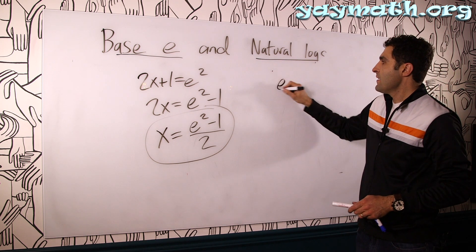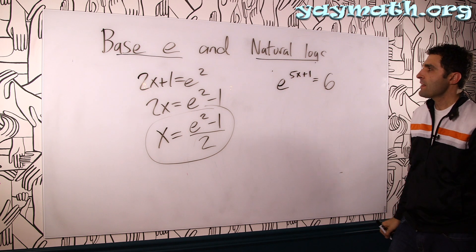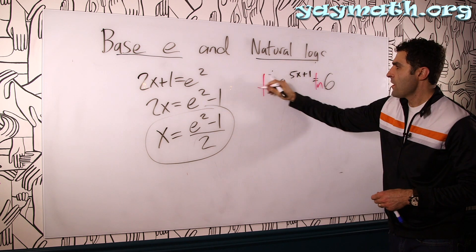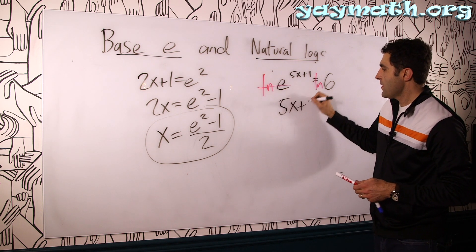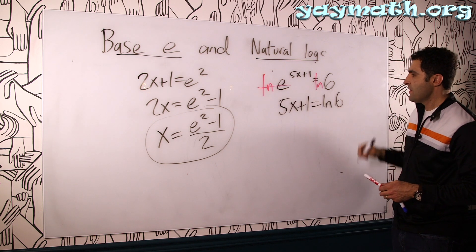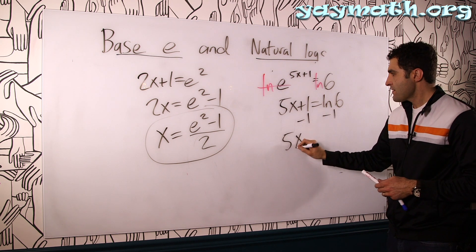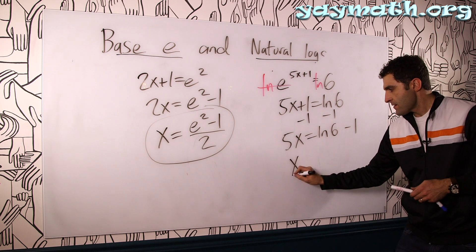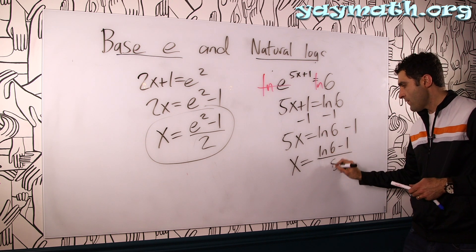Now I'm going to give you one starting as E. Let's say you had like E to the 5x plus 1 equals 6, something like that. So you do LN of both sides. You use E to go, as previously said, you get 5x plus 1 equals LN 6. Minus 1 minus 1. 5x equals LN 6 minus 1. Divide by 5. x equals LN 6 minus 1 all over 5.